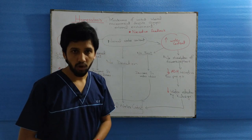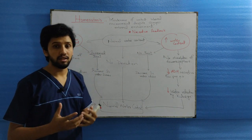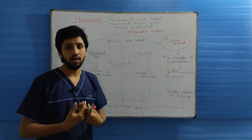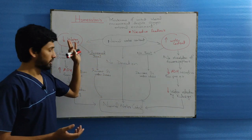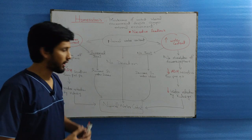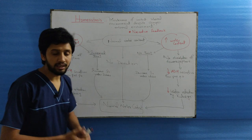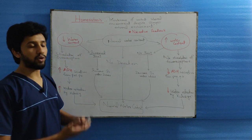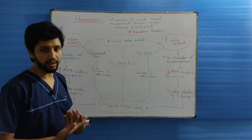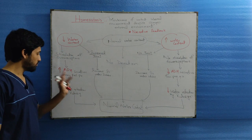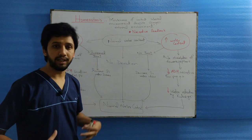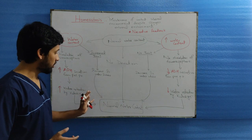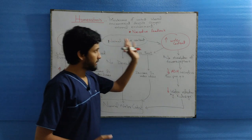When there is a shortage or fall in the water level, the thirst center will be stimulated, increasing the intake of water and returning the water level to normal. Likewise, receptors present in the hypothalamus will be stimulated, increasing ADH secretion from the posterior pituitary. ADH is the anti-diuretic hormone. When this hormone is stimulated, there is increased water reabsorption from the kidneys, and the shortage of water is corrected to normal.